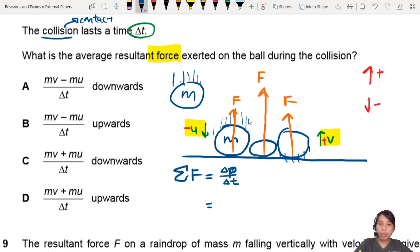So the final momentum will be MV positive minus initial velocity, which will be M times U negative, so MU, over delta T. So this will give you MV plus MU over delta T.